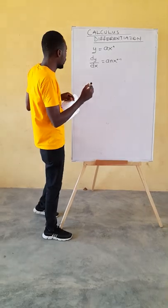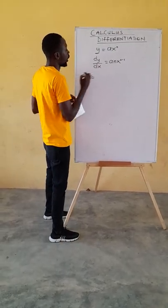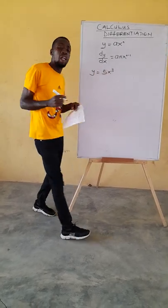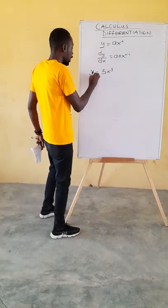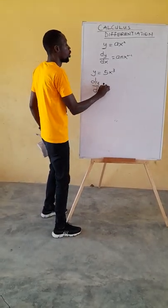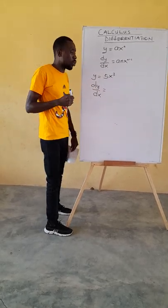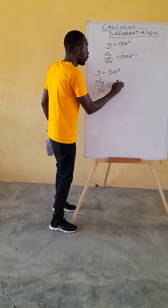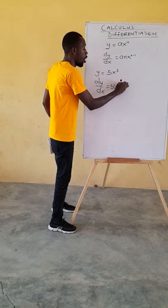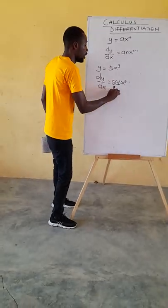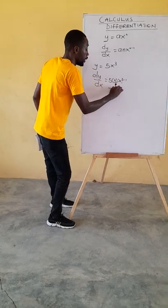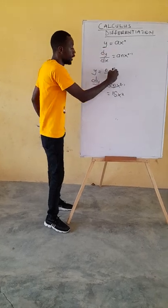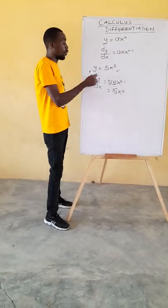Now how do we apply this? If I have an equation of the curve, let's say 5x exponent 3, and I'm asked to find the gradient. To apply the differentiation rule, we drop the exponent to multiply the coefficient of the variable. So we get 5 times 3, x, then we reduce the power by 1: 3 minus 1. So this gives us 5 times 3 which is 15, and x exponent 2. This becomes the gradient of this curve, or the derivative of this curve.